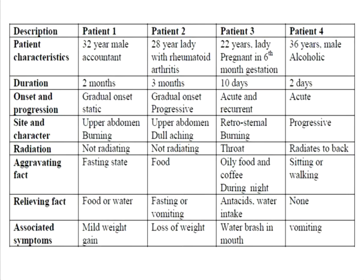Patient three has a relatively shorter duration of pain — about 10 days — located in the upper abdomen and more closely in the retrosternal region, radiating to the throat. It is a nocturnal pain aggravated by oily food or coffee. Oily food slows gastric emptying, while coffee and alcohol decrease the tone of the lower esophageal sphincter. The patient attempts antacids or water for relief. This pattern — predominantly nocturnal, retrosternal, radiating to the throat — is indicative of reflux esophagitis or gastroesophageal reflux disease.